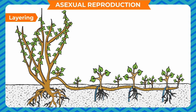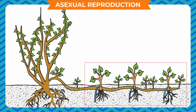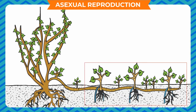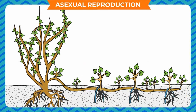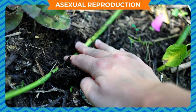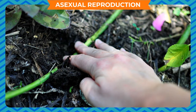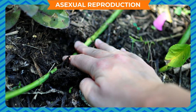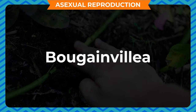Layering: In this method, a young branch is bent towards the ground and covered with moist soil. After some time, roots develop from the covered part in contact with the soil. This is called a layer and the process is called layering. The branch is then separated from the parent plant and allowed to grow into a new independent plant. This method is used to develop plants like jasmine, rose, and bougainvillea.